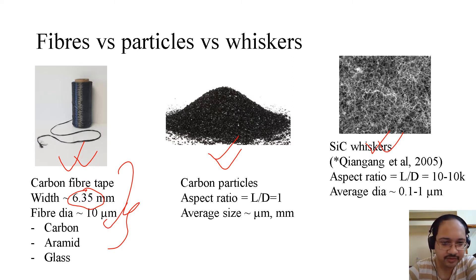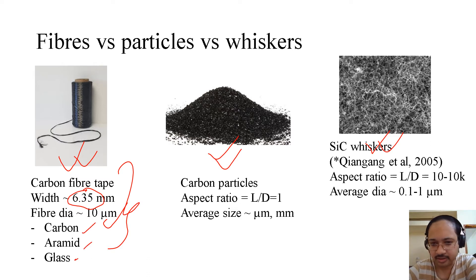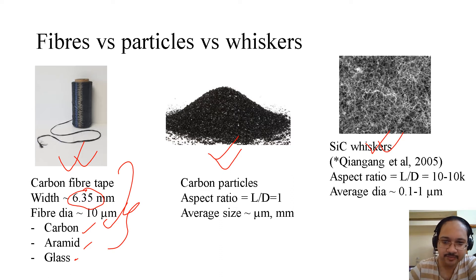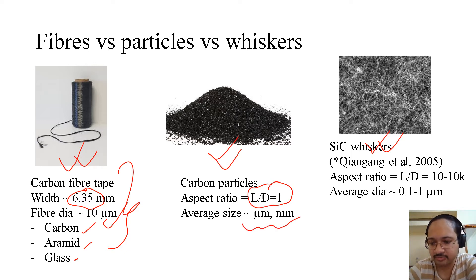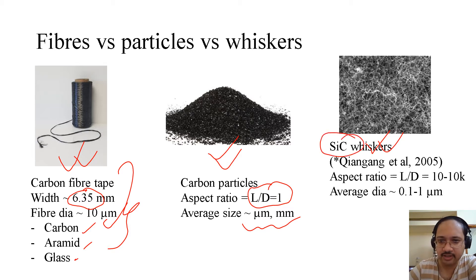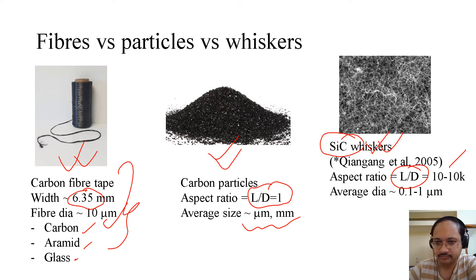Typically we see carbon fiber diameter of 7 microns. It can be carbon, it can be diamond, it can be glass, or other fibers as well. For carbon particles, the aspect ratio — that is length over diameter — is one, and the average size is in the micrometer or millimeter range. For whiskers, I have shown silicon carbide whiskers where the aspect ratio is 10 to 10,000, giving an average diameter of 0.1 to 1 micron.